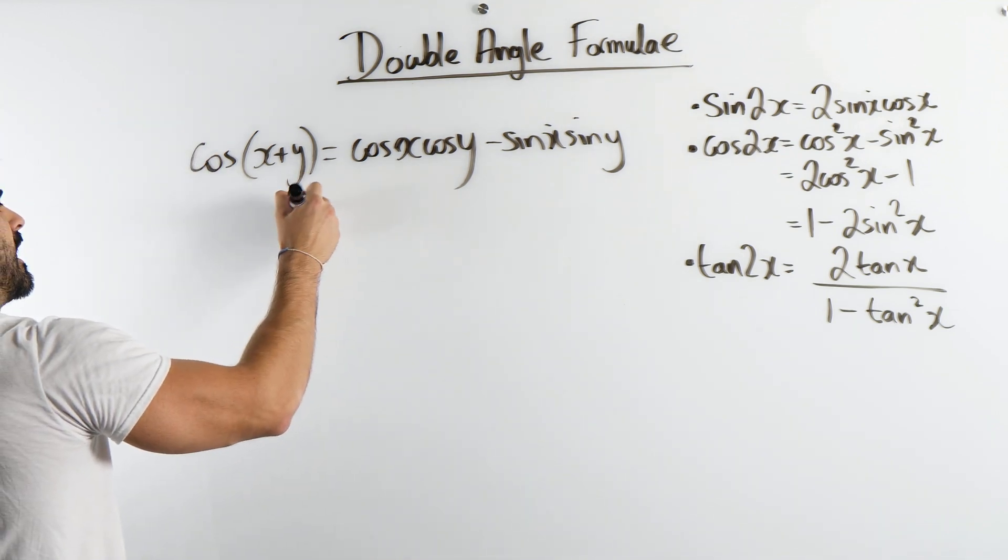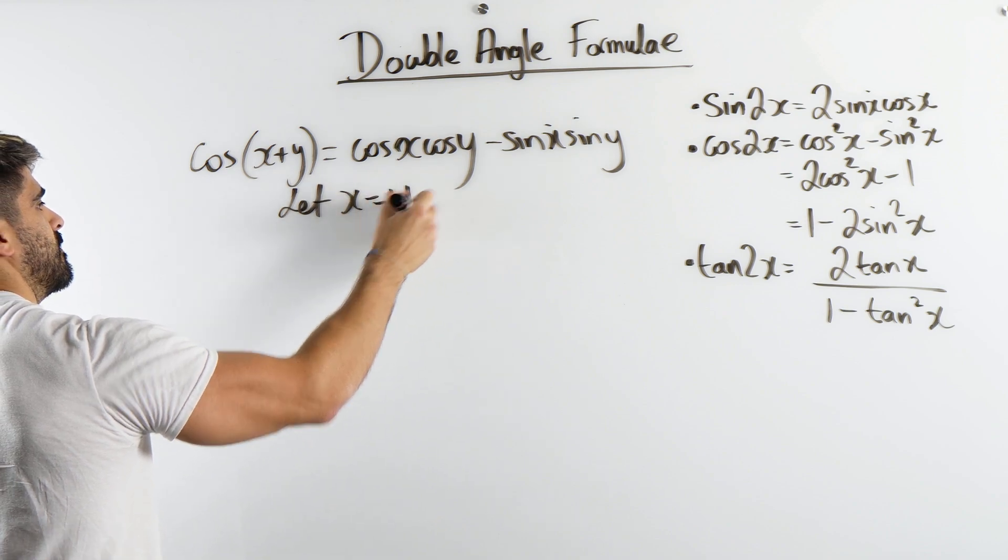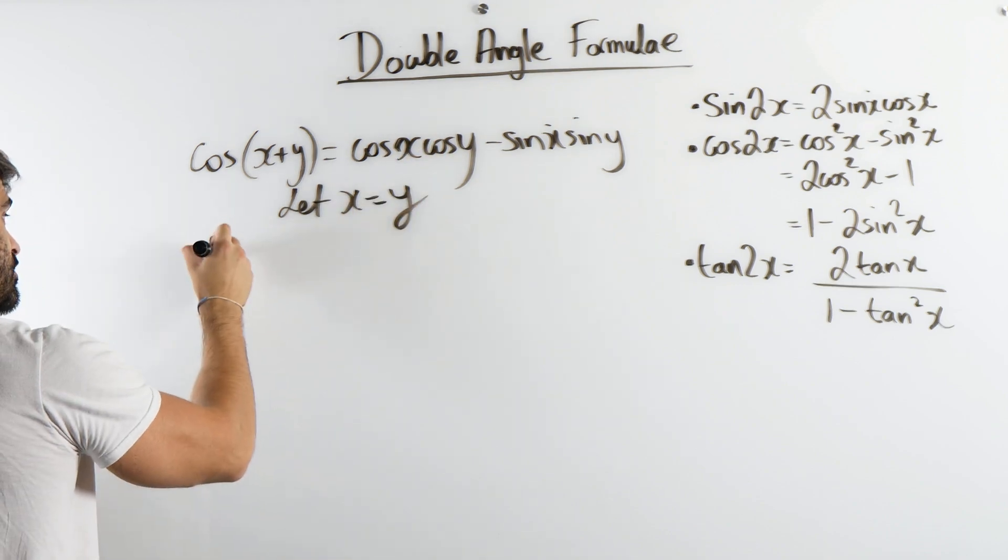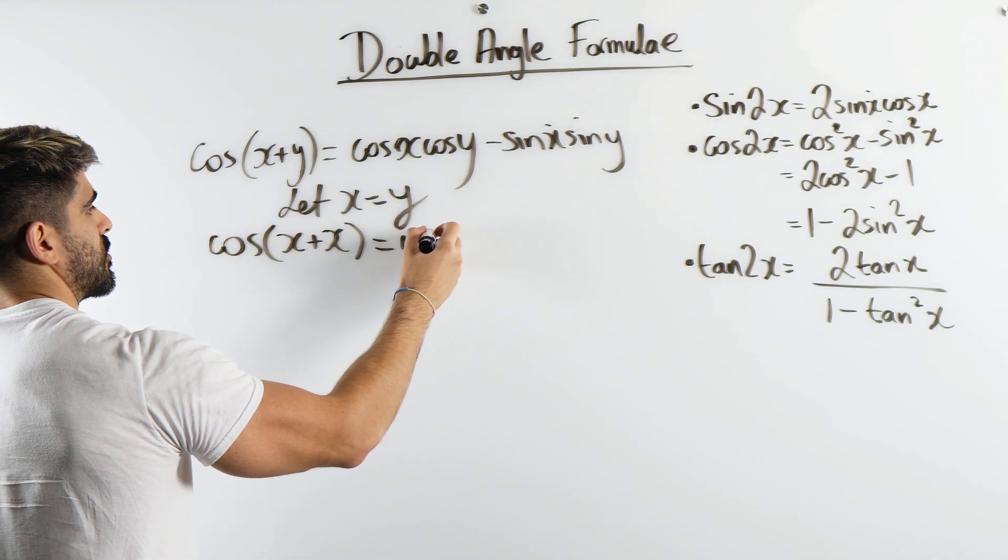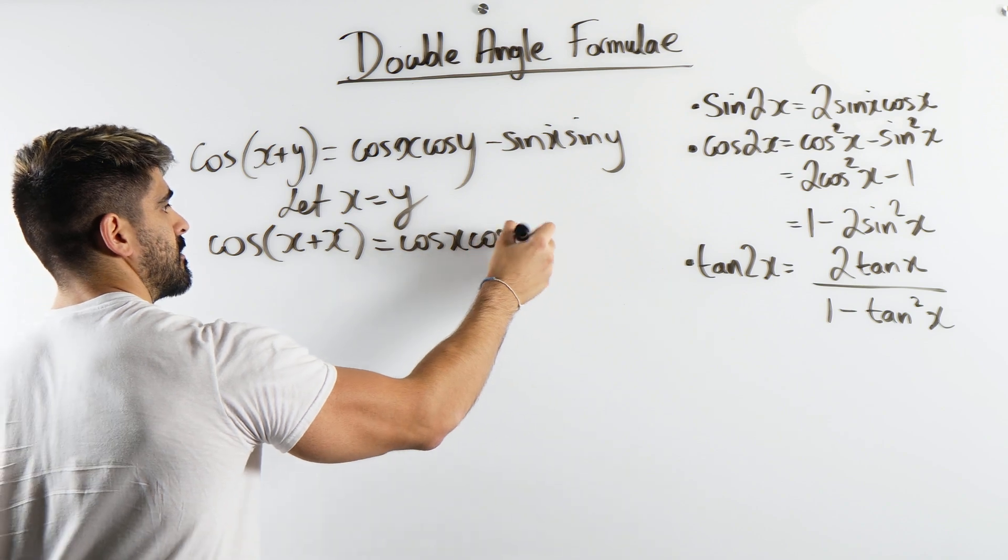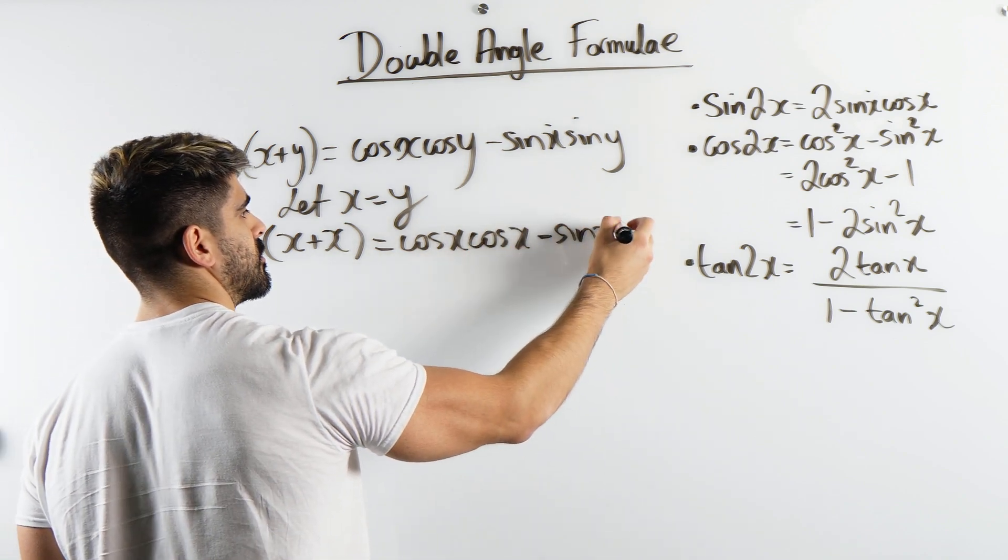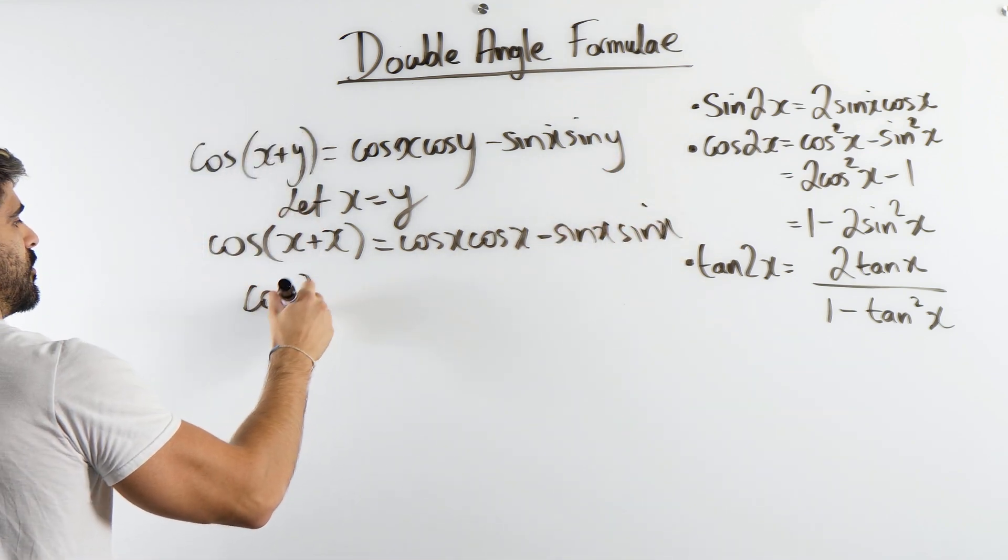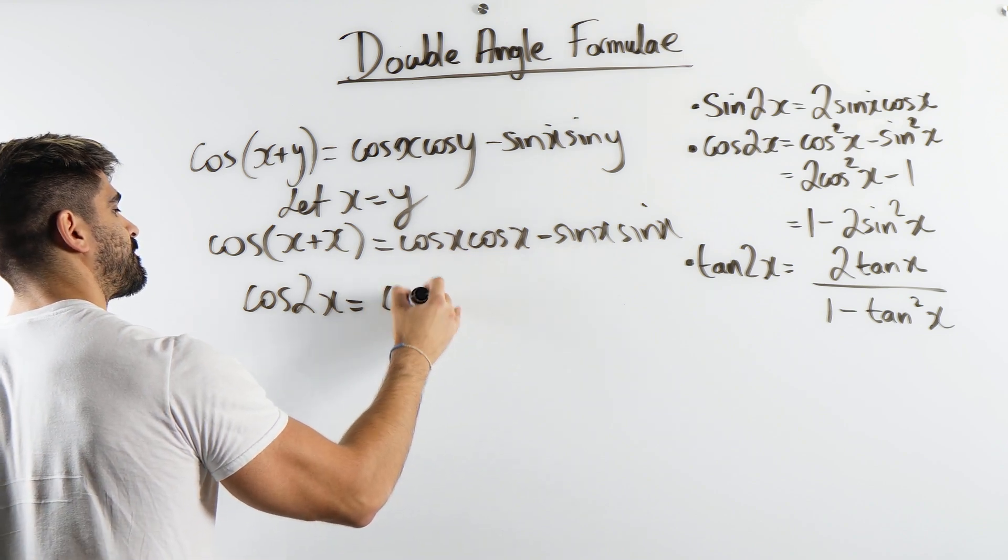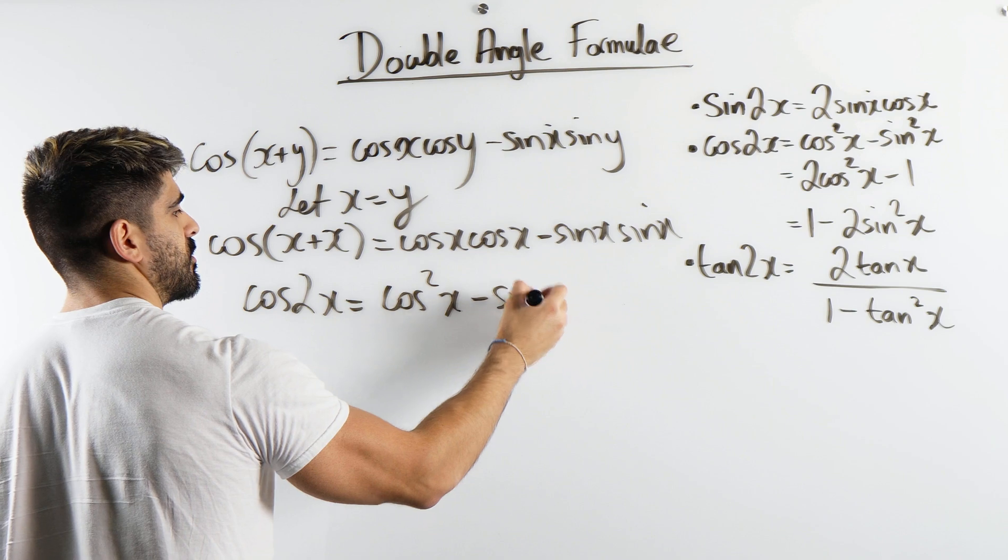So let's again take a look at when x and y are the same. So we're going to get cos of x plus x is cos x, cos x minus sin x, sin x. So we get cos of 2x is cos squared x minus sin squared x.